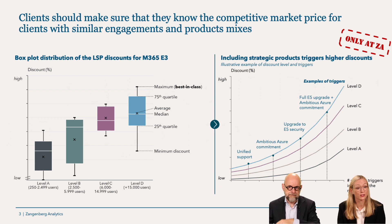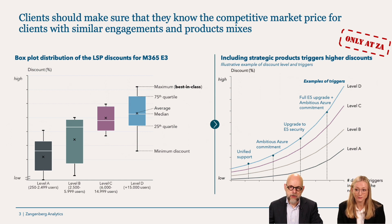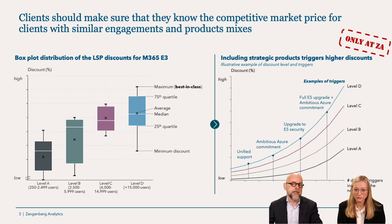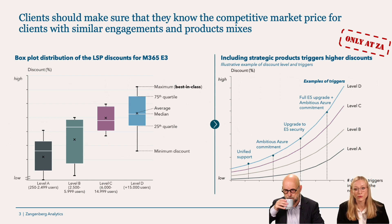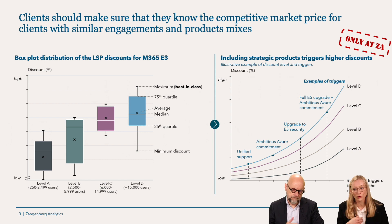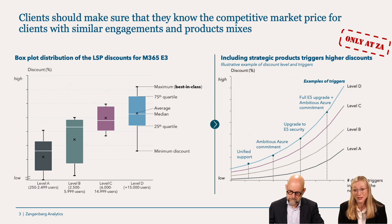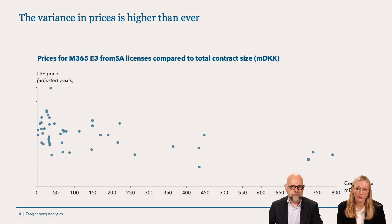A level A customer has gotten a better discount than a level D customer — the worst discount at level D is actually a worse price than the best price at level A. This shows that Microsoft can place you in any category, but there is still huge room for negotiation within each category. The higher the level, the higher the discount you can generally get, but it is possible to negotiate regardless.